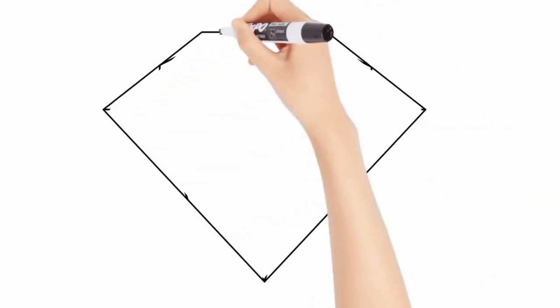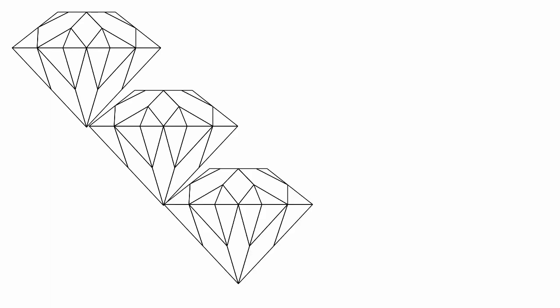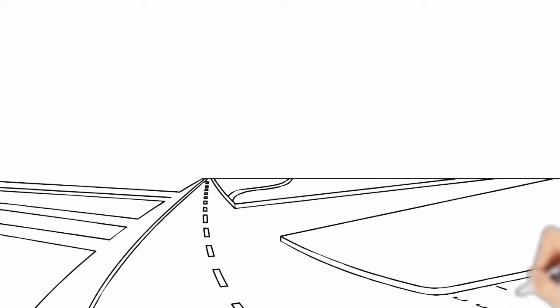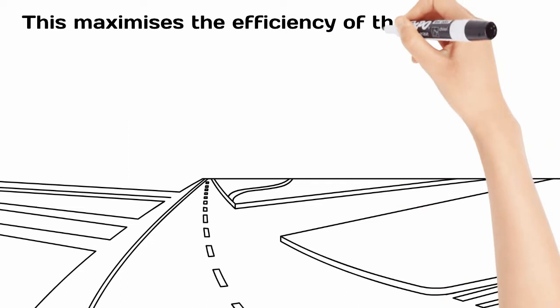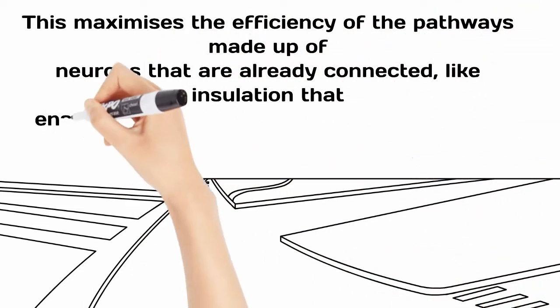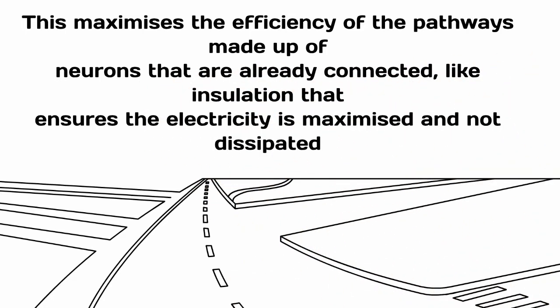Perfecting tends to occur when you become expert at something, which can be identified if you take easily to something even after years of neglect. It's like a highway for your neurons. This maximizes the efficiency of the pathways made up of neurons that are already connected, like insulation that ensures the electricity is maximized and not dissipated.